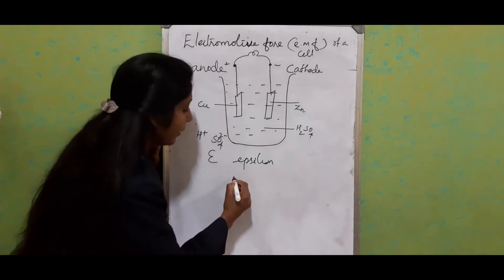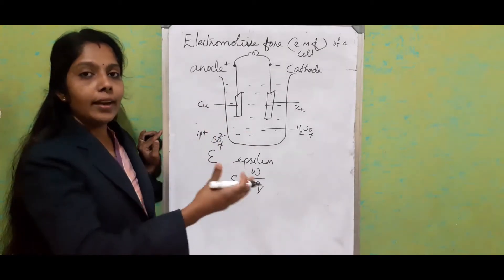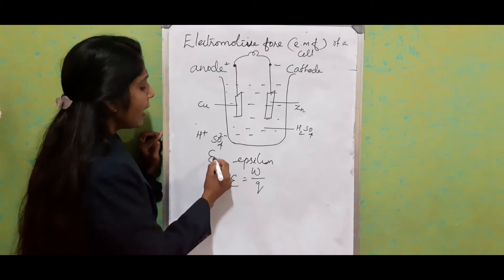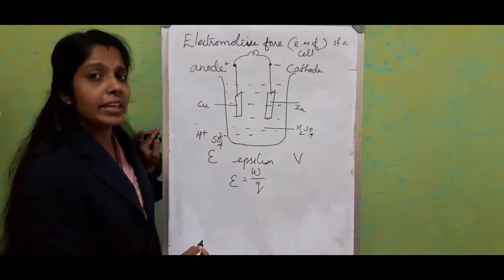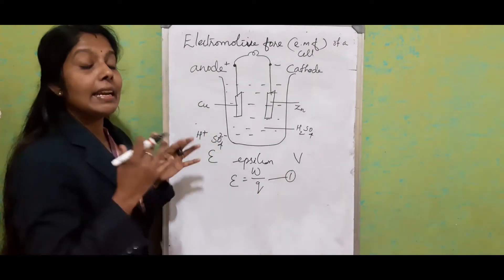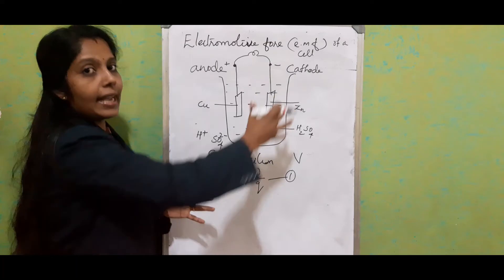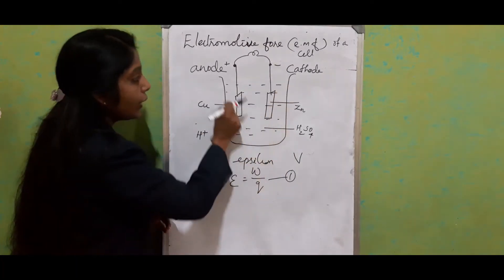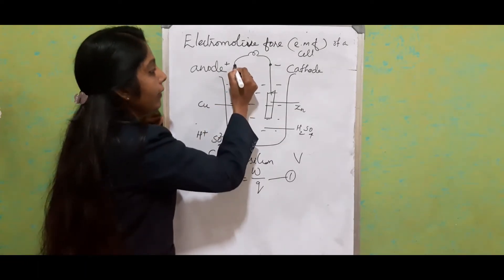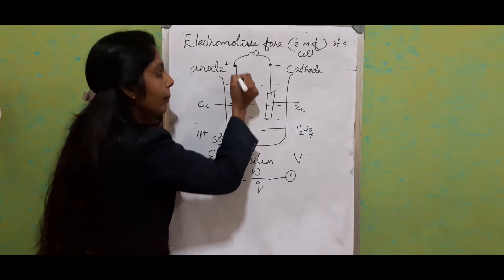We can also define EMF another way. If we connect a bulb through an external circuit, EMF is the amount of work done to bring a unit positive charge through the entire setup — through inside the solution and through the outside circuit. In equation form: ε = W/Q. The unit of epsilon is the same as potential difference (V). If we consider the anode as a starting point, the positive charge must go through the entire circuit and through the electrolyte and come back — that full round is the electromotive force.